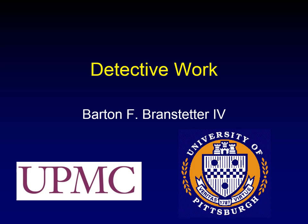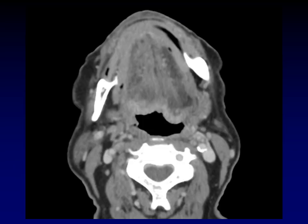I saw this case yesterday and I thought it was a great example of the sort of analysis that's necessary in head and neck radiology. The history given was tonsil mass, so they did a CT of the neck, and you can see what they're appreciating here. I think you should pause the video now and see if you can figure out what's going on with this patient, and if you can tell me what other picture you'd most want to see.